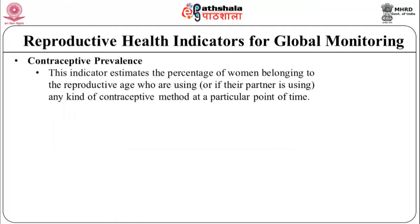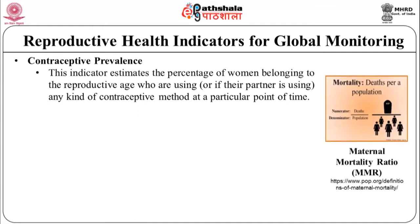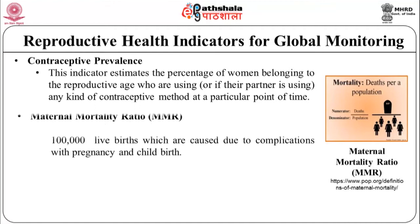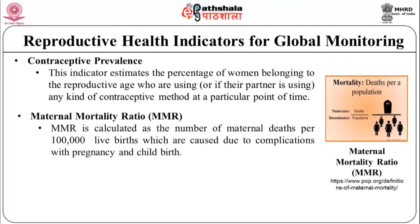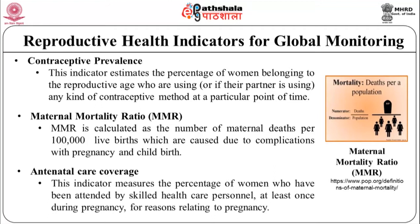Contraceptive prevalence estimates the percentage of women belonging to the reproductive age who are using, or whose partner is using, any kind of contraceptive method at a particular point of time. Maternal Mortality Rate (MMR) is calculated as the number of maternal deaths per 100,000 live births which are caused due to complications with pregnancy and childbirth. Antenatal care coverage measures the percentage of women who have been attended by skilled healthcare personnel at least once during pregnancy.